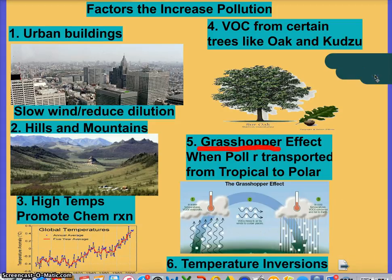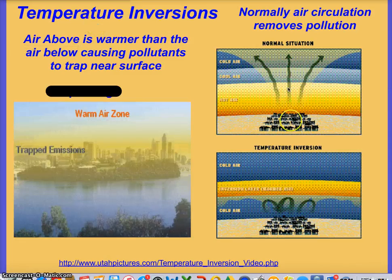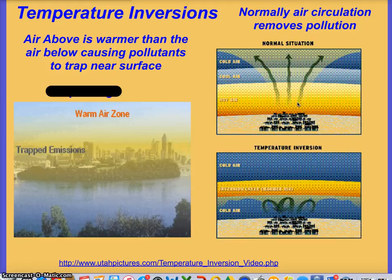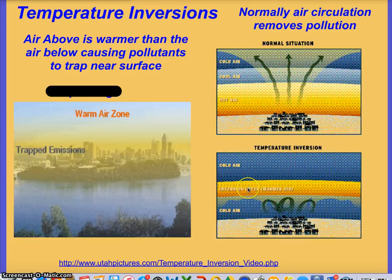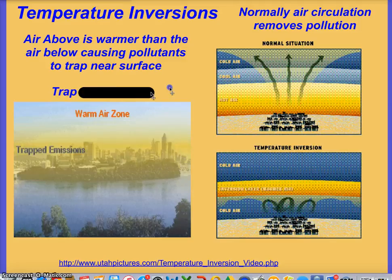Temperature inversions are another factor. In a normal situation, you have warm air near the surface and it gets colder as you go up through the troposphere. But with a temperature inversion, you get a cold layer below the warm layer. Since pollutants should rise and dilute as they go up, instead they're forced back down and form a layer of smog or pollution.